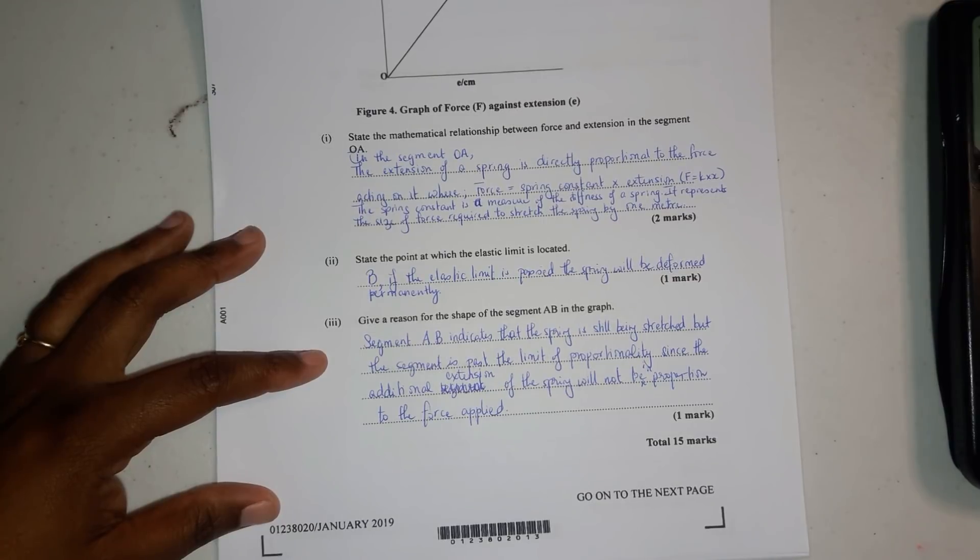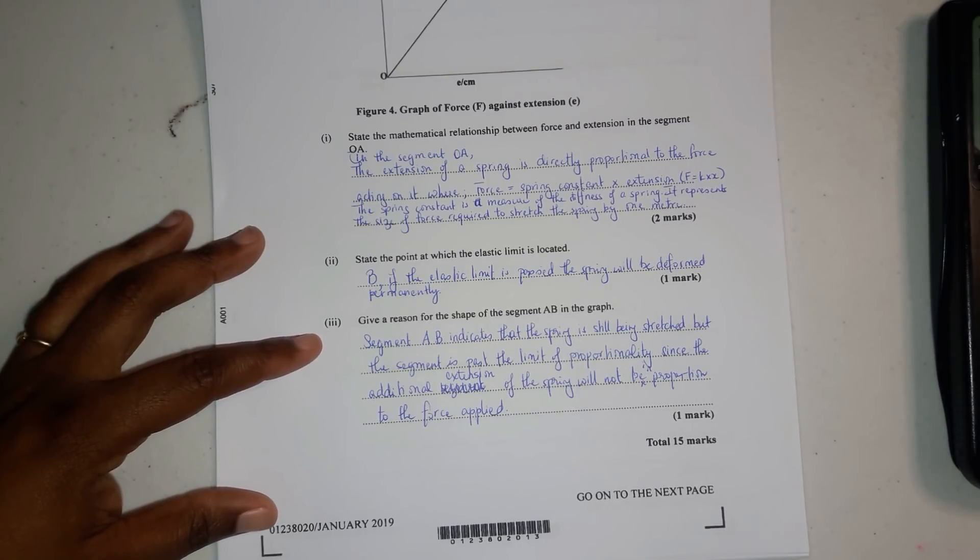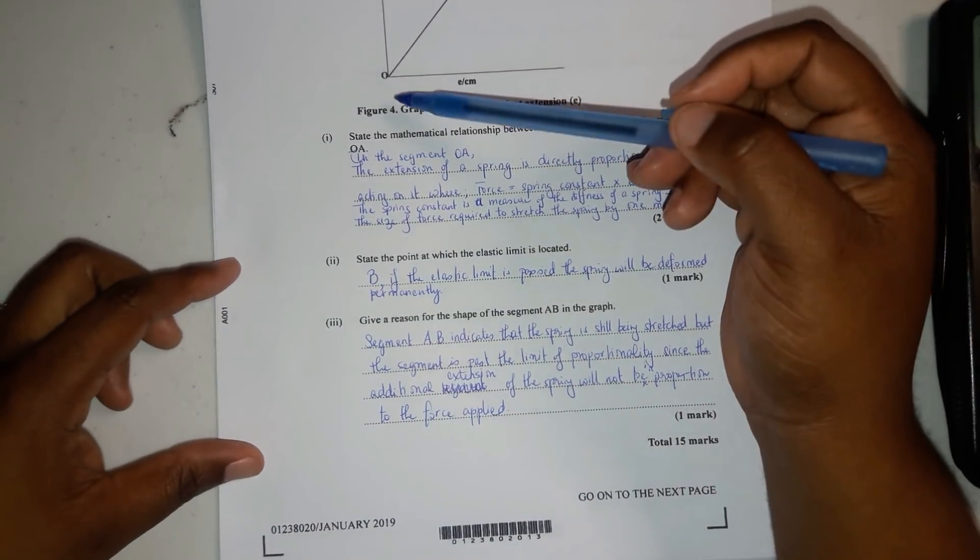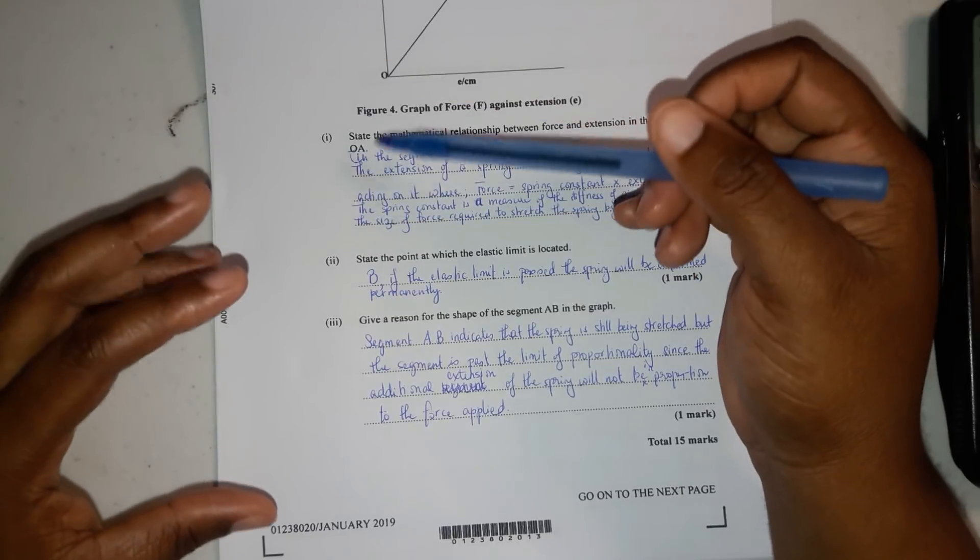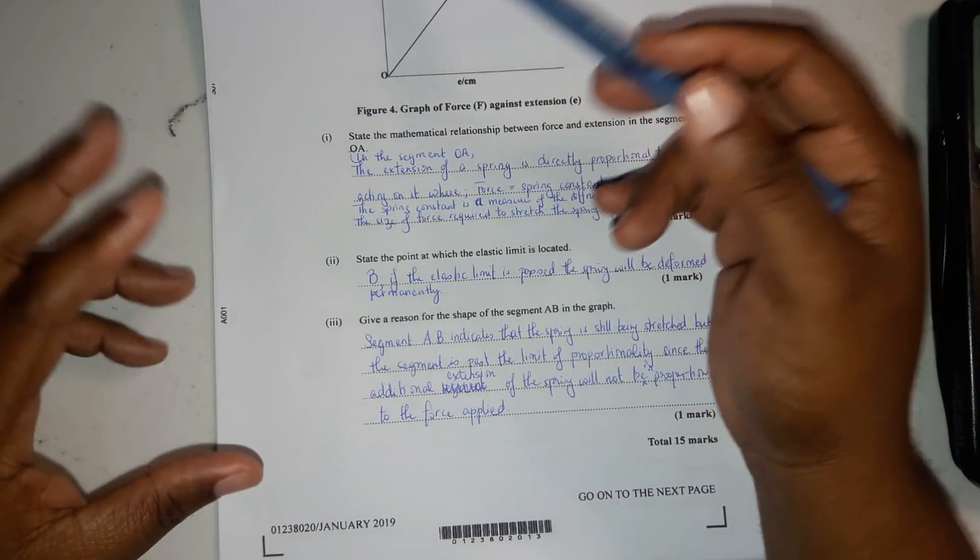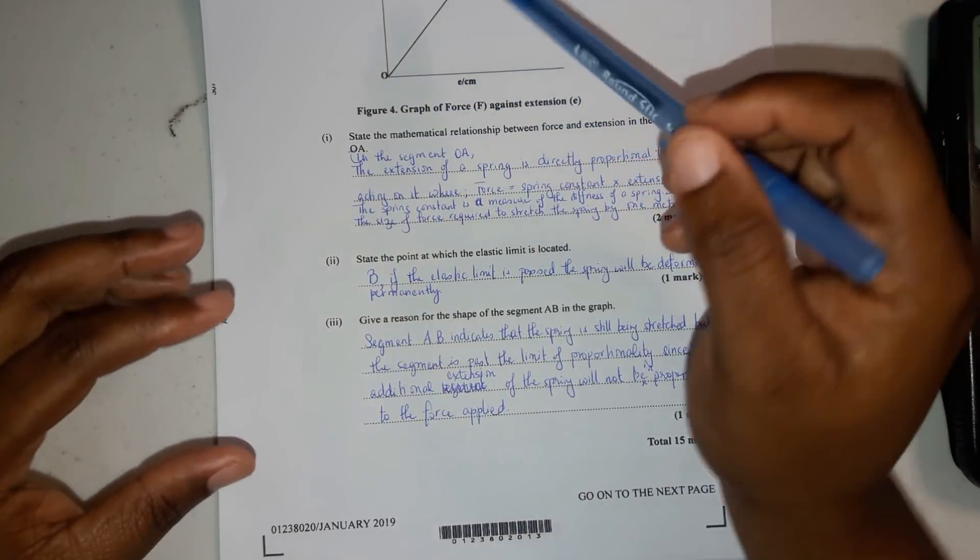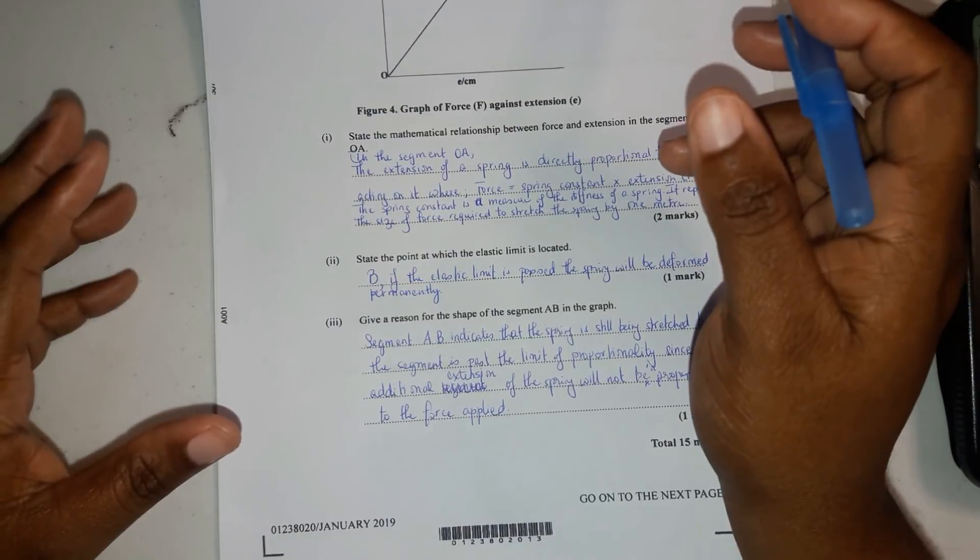Do note that a high spring constant means that the spring is very stiff. The spring constant is effectively a measure of the stiffness of a spring. This is just general knowledge. You didn't have to do any calculations. You just had to know how to interpret the graph.